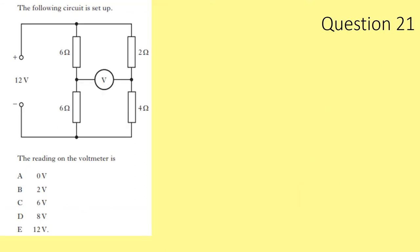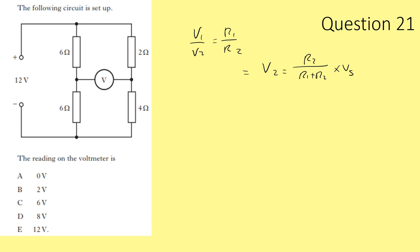Question 21. We have a Wheatstone bridge configuration with a 12 V supply. On the left side, two 6 Ω resistors split the voltage evenly: 6 V each. On the right side, a 4 Ω and 2 Ω resistor — the voltage across the 4 Ω is twice that of the 2 Ω, both summing to 12 V, giving 8 V across the 4 Ω. The voltmeter reads 8 − 6 = 2 V. Answer: B.